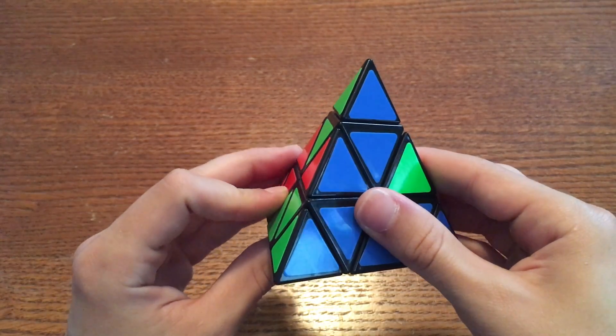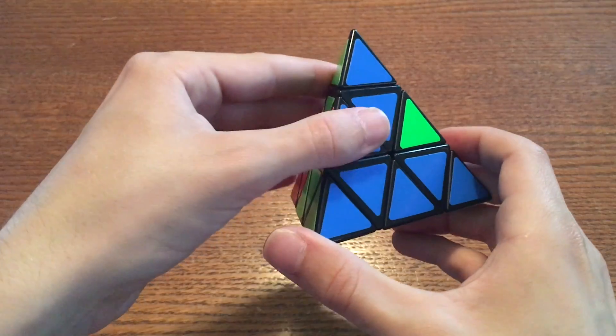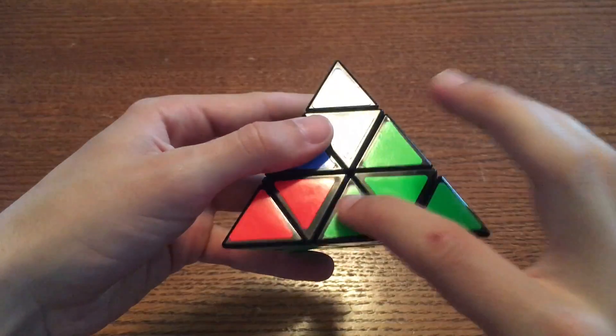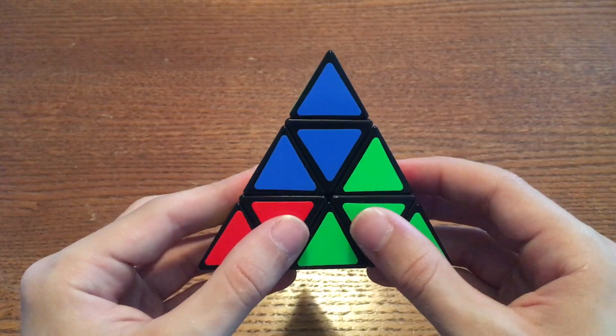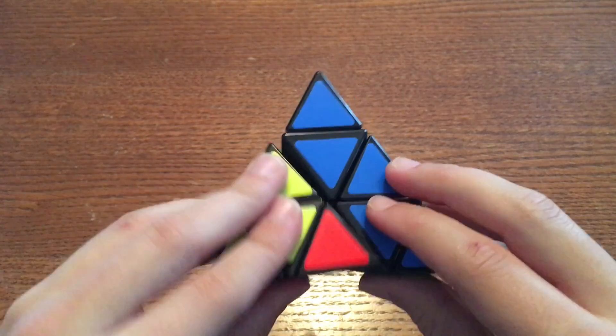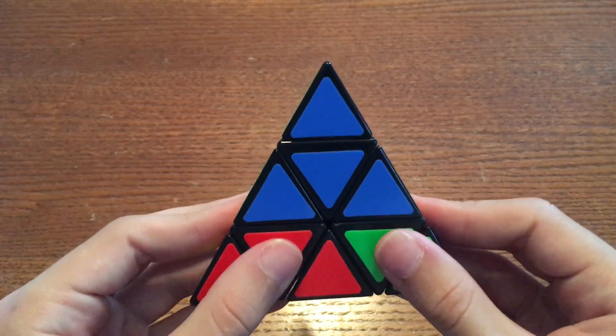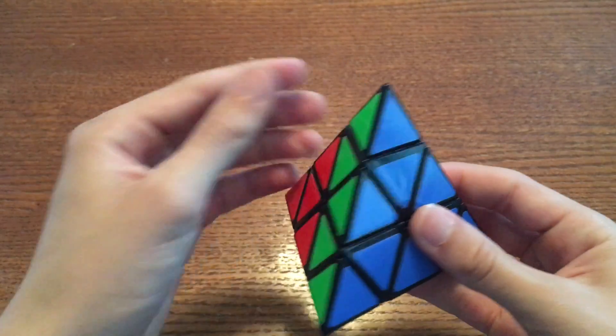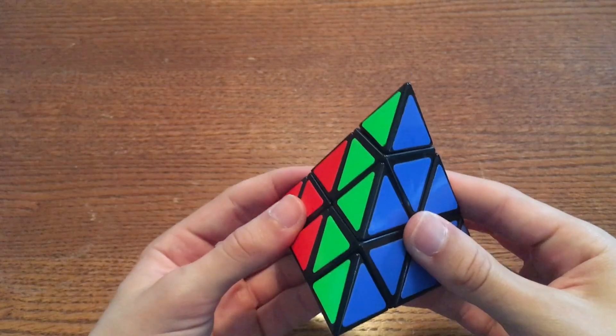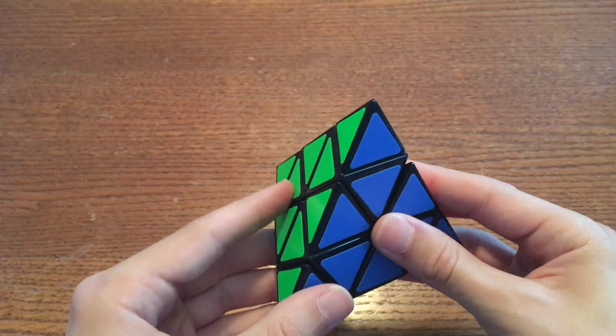then turn the bottom layer to bring that edge around to the bottom of the front face like this. Now do whichever algorithm you needed. After doing the algorithm, move the bottom layer back over to the left, and then push that back layer back up to get the puzzle back to normal.